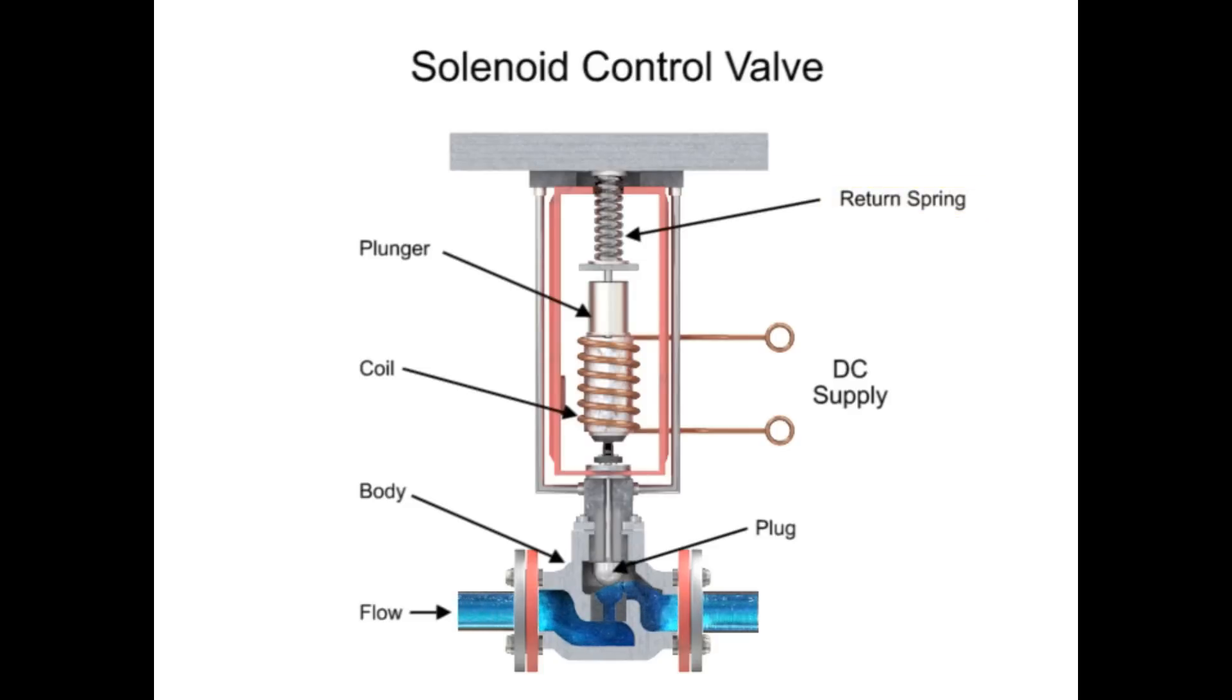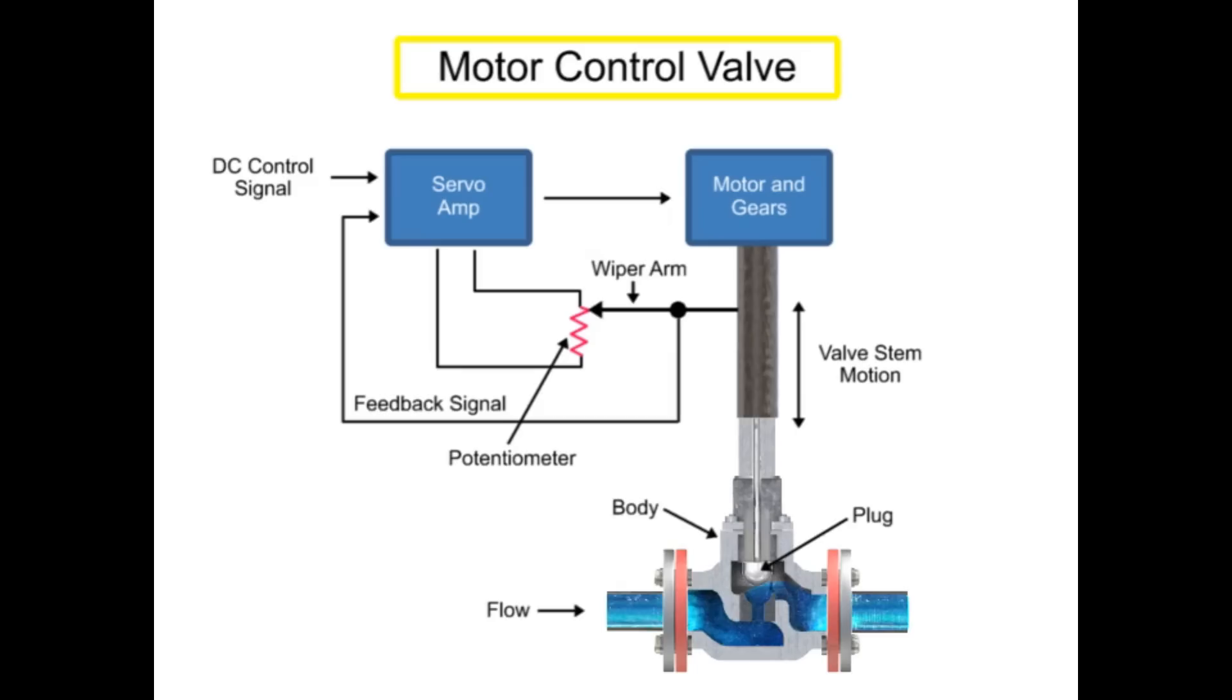Another method for variable valve positioning uses a motor and is referred to as proportional control mode. Using a gear motor attached to the valve stem, a servo amplifier provides a DC control signal that moves the valve to the desired position. Feedback is achieved with a wiper arm attached to the valve stem that sends a signal back to the servo amplifier where the position is monitored. The servo amplifier drives the motor until the control signal is equal to the feedback signal.